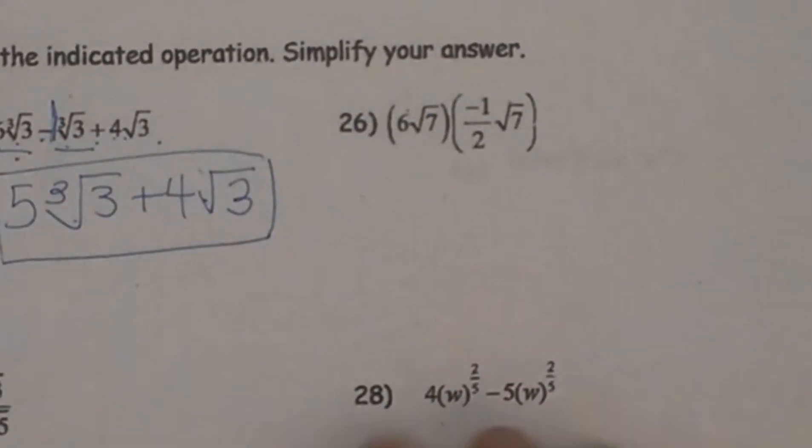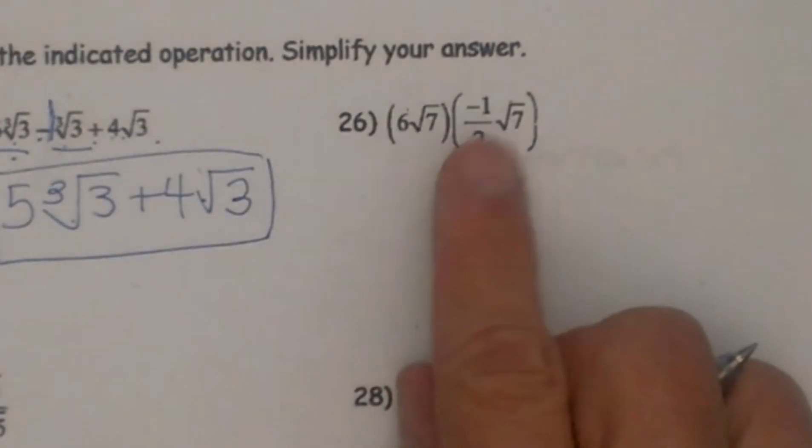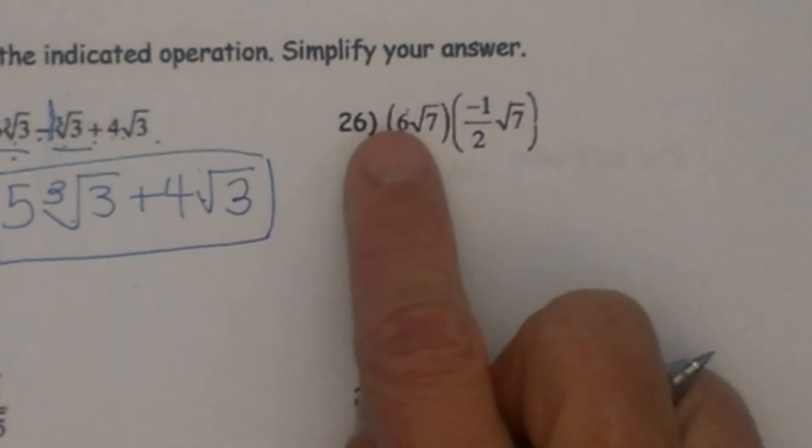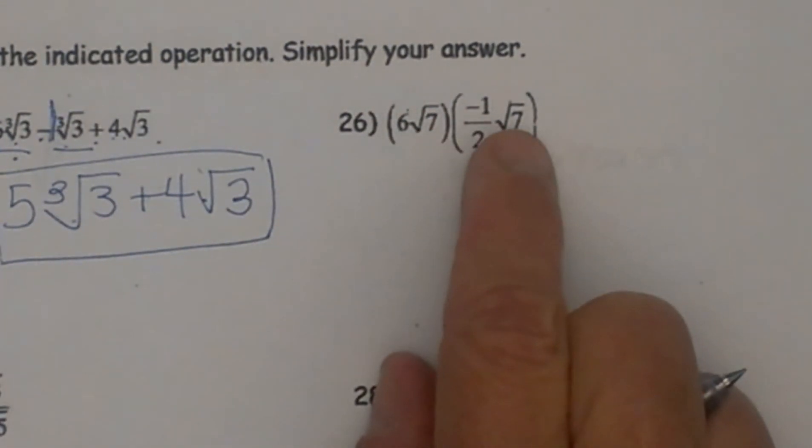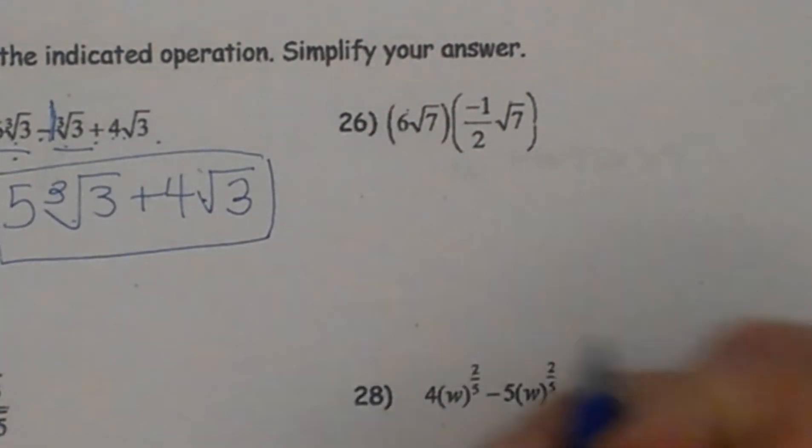Let's look at a multiplying one. My rule that I always teach is my outside times my outside and my inside times my inside. So when you are multiplying, you are going to multiply the outside coefficients.